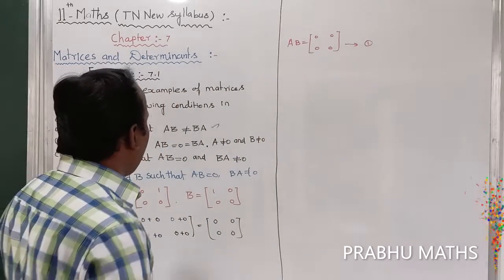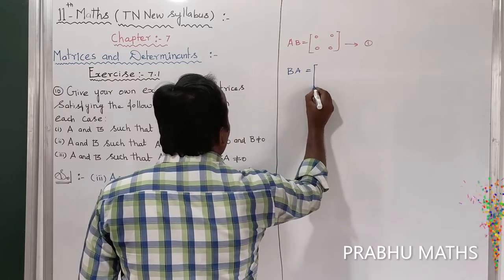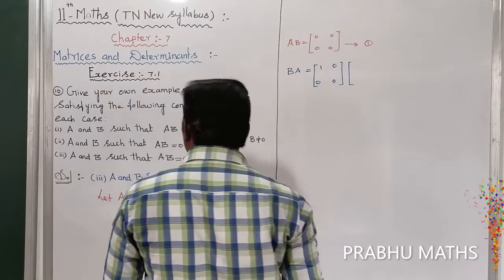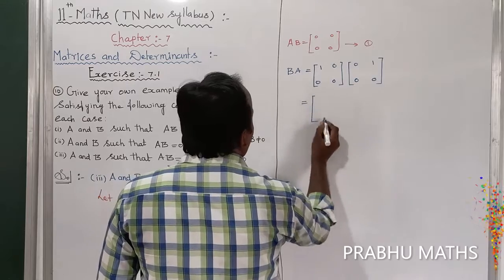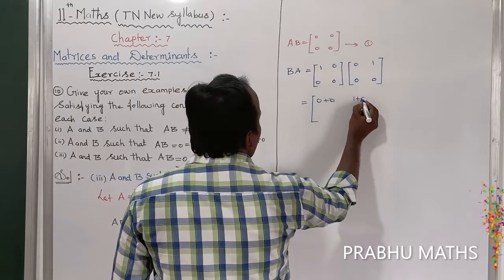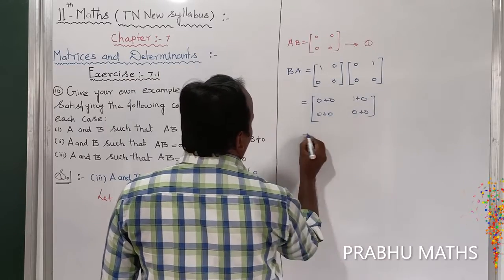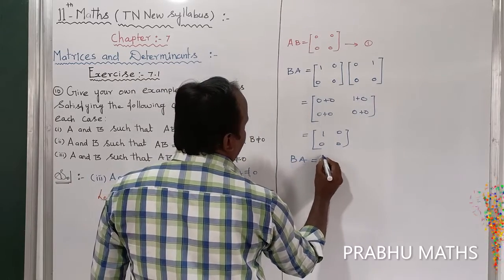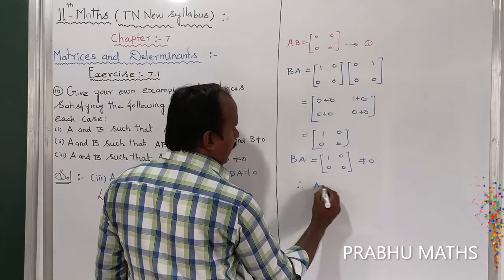Now let us find out the value of BA. BA matrix equals B times A: B is [1, 0; 0, 0] and A is [0, 1; 0, 0]. Computing: 1 into 0 plus 0 into 0 = 0; 1 into 1 plus 0 into 0 = 1; second row: 0 plus 0 = 0, 0 plus 0 = 0. So the answer is BA equals [1, 0; 0, 0], which is not equal to 0.